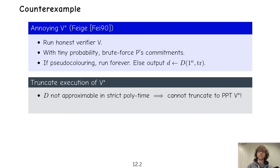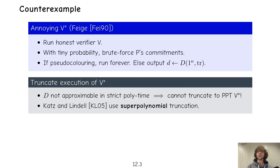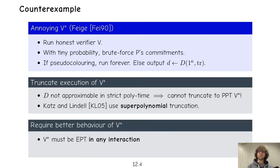This can be salvaged: Katz and Lindell show that using superpolynomial truncation and some additional techniques, you can actually prove that the simulation works and handle expected polytime verifiers. There's also another take: we could say these designated adversaries are not worth it and require the adversary to be expected polytime in any interaction. But maybe surprisingly, this is also not good enough, because Katz and Lindell show that due to the rewinding in simulation — which never happens in the real protocol — you can have a verifier that makes the simulation runtime explode while no real interaction does.